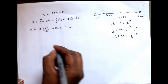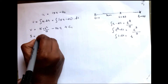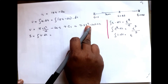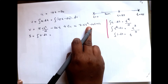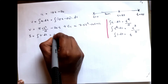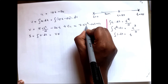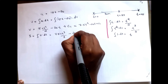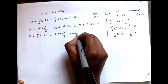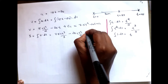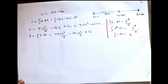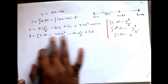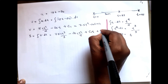Integrating the acceleration gives the velocity equation. Integrating that result gives the displacement equation. We add constants C1 and C2 at each stage. The velocity equation becomes 7.5t² minus 20t plus C1, and integrating again gives the displacement equation with constant C2.